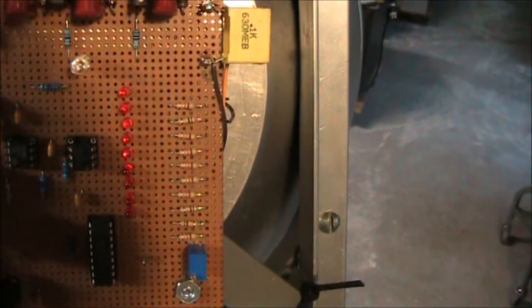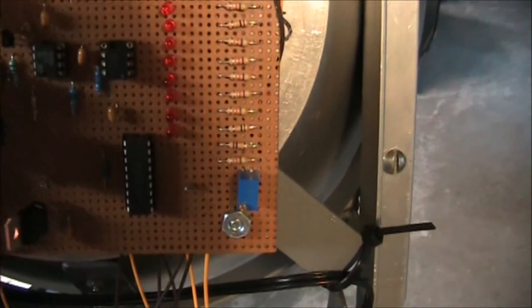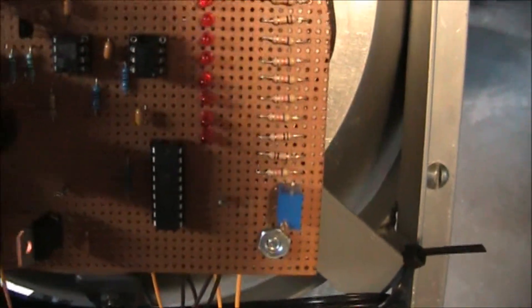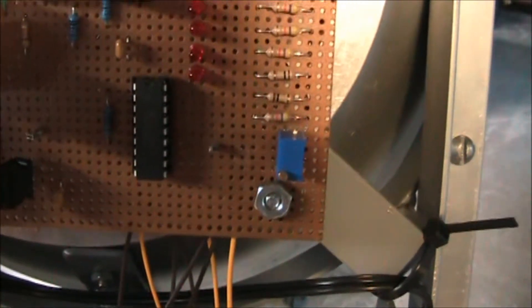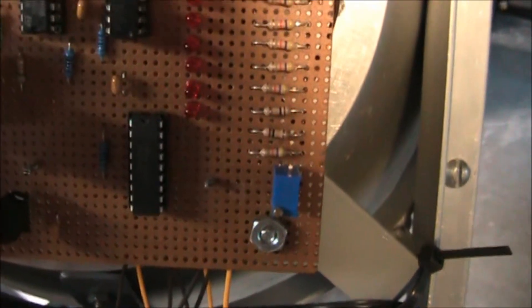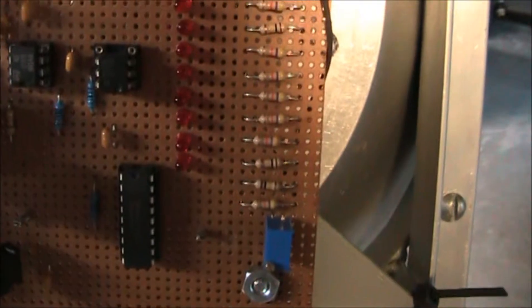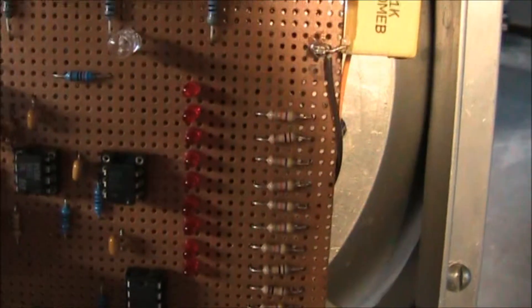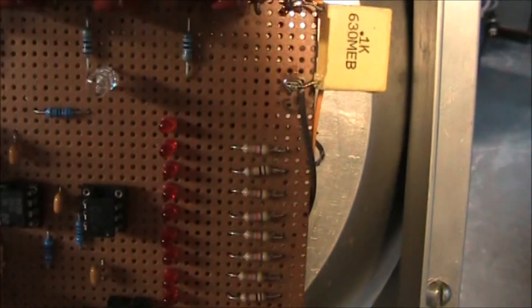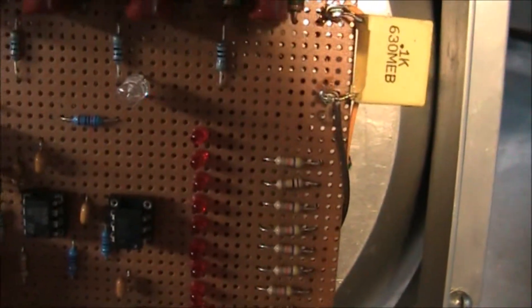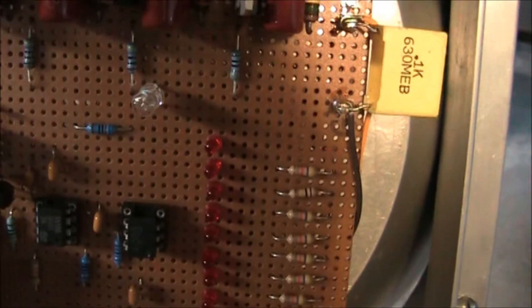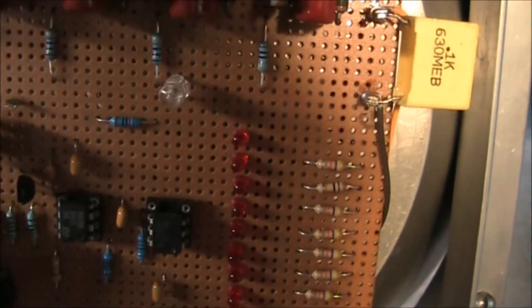So the base of this project is I'm using an LM3914 bar graph IC, and the bar graph is the voltage indicator. And on the last segment, instead of lighting up the last LED, I used an optocoupler.